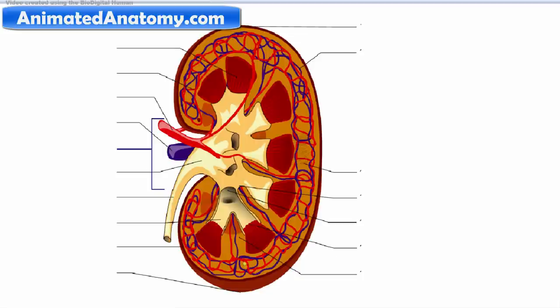The initial filtering portion of a nephron is in the renal corpuscle located in the cortex here, which is followed by the renal tubule that passes from the cortex deep into the medullary pyramids.